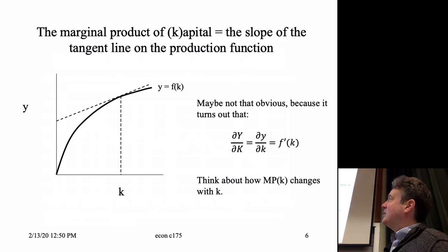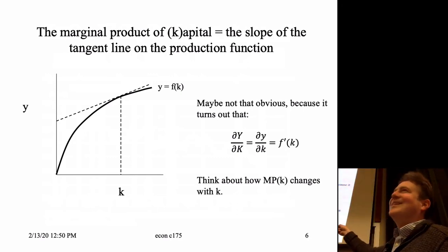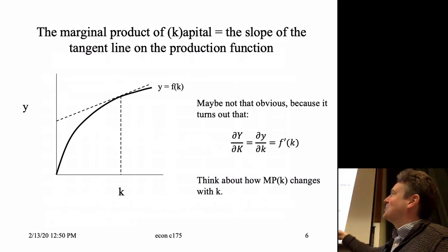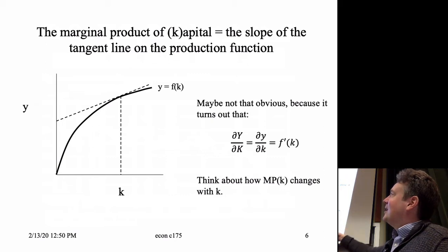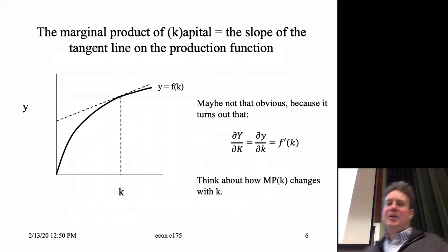The farther up the ski slope you get, the flatter it gets — except here the reverse applies: up here is the flat part and down here is the steep part. There are higher rates of return to capital when capital is relatively scarce, and smaller rates of return when capital is quite plentiful.